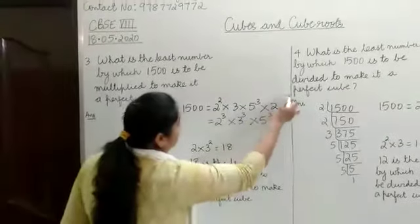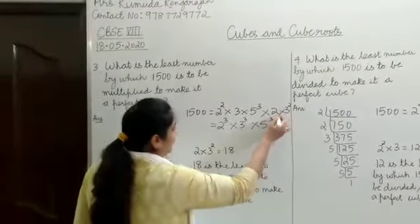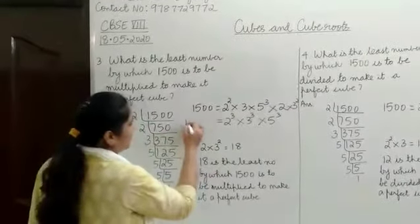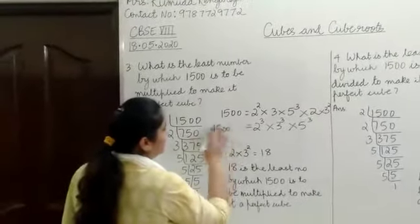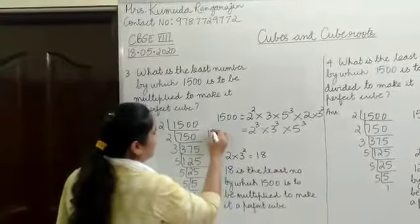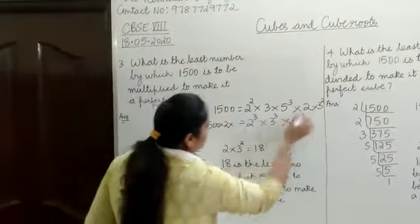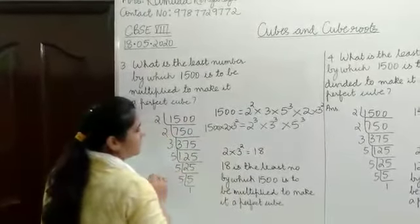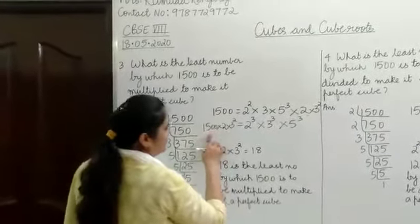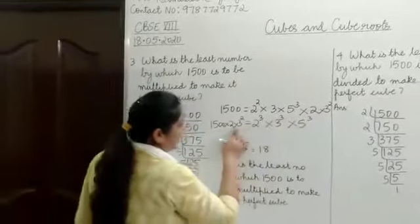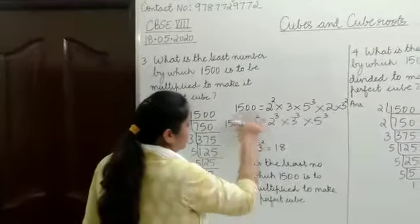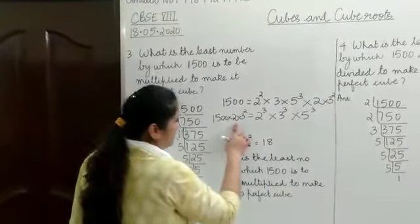Now when you multiply something on the right-hand side, you need to do the same thing on the left-hand side. Which means 1500 must be multiplied by 2 and 3 squared so that the product will be a perfect cube.